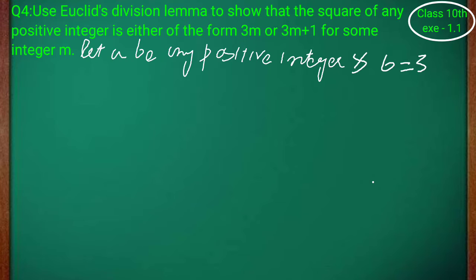Hello and welcome to our YouTube channel Iqbal Sir's Academy. I hope you guys are well and fine. Class 10th Exercise 1.1 ka question number 4 hai humari saamne: use the Euclidean Division Lemma to show that the square of any positive integer is either of the form 3m or 3m plus 1 for some integer m.